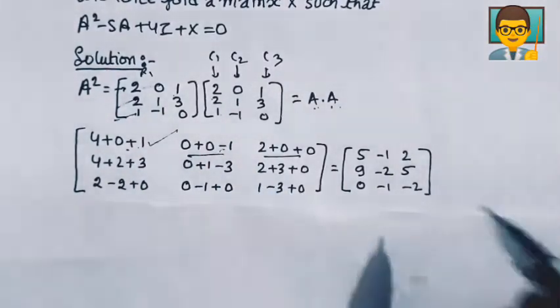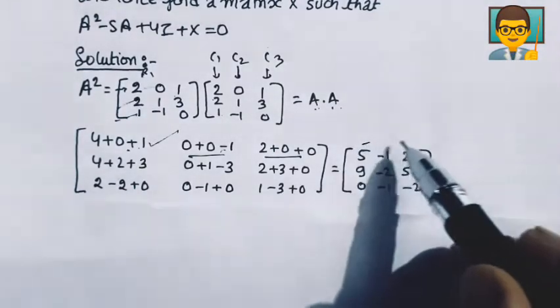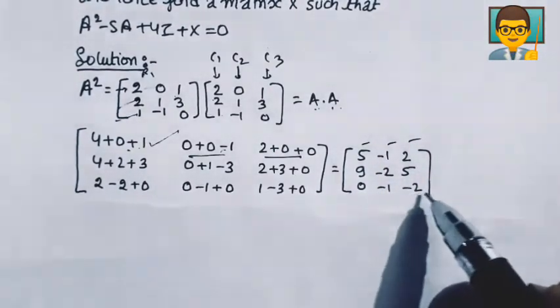When you do this multiplication, then you have a value of 5, -1, 2, 9, -2, 5, 0, -1, and -2.